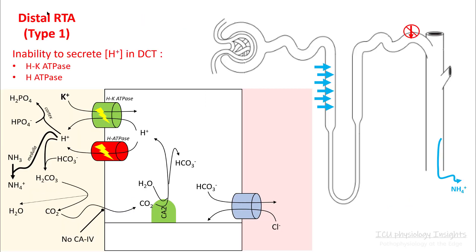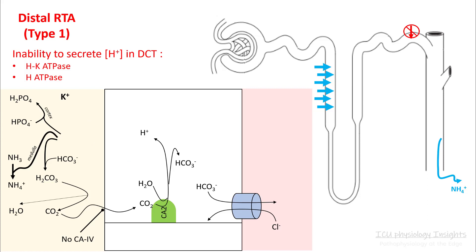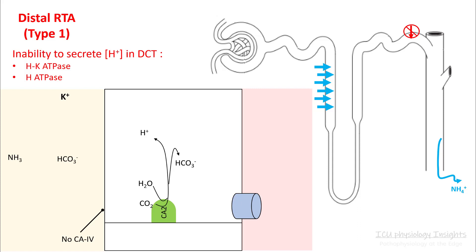In distal RTA, you have inability to secrete hydrogen ions in the distal convoluted tubule. Two channels are involved: hydrogen ATPase and hydrogen-potassium ATPase. The hydrogen ion excreted from these channels can have three fates: combine with urinary buffers like phosphoric acid; combine with ammonia to form ammonium ion and be secreted in urine; or combine with bicarb to form carbonic acid, with the resulting CO2 used to regenerate bicarb absorbed into circulation. Without these two channels, these processes don't happen, bicarb is not generated, and since there are no major bicarb absorptive processes after the distal convoluted tubule, you lose quite a bit of bicarb in the urine.